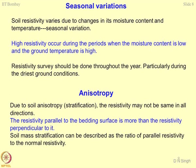Soil resistivity varies due to changes in moisture content and temperature, which is essentially seasonal variation. High resistivity occurs when moisture content is low and ground temperatures are high. Resistivity surveys should ideally be done throughout the year, but the best practical design values are the worst-case — the driest possible state of the material. You can then study how much resistivity drops per unit of moisture intake into the system.